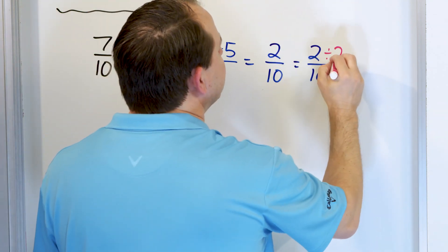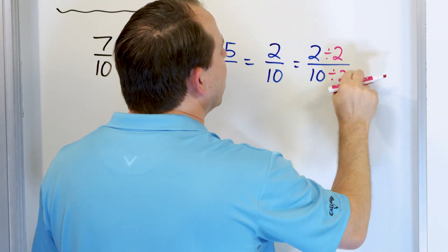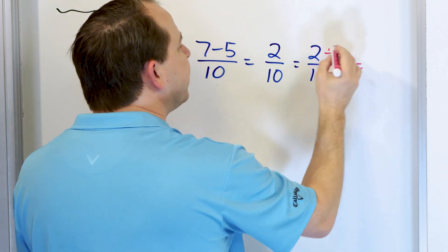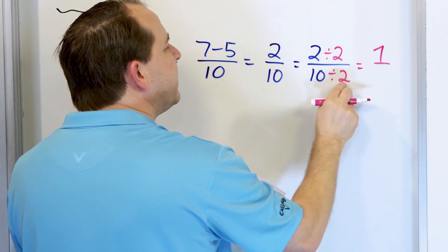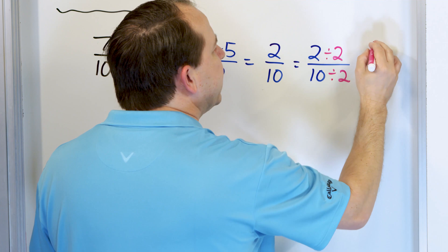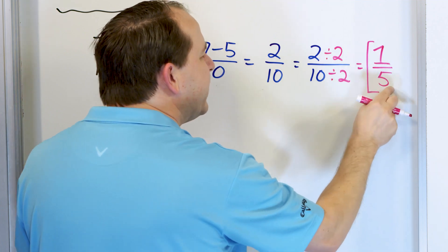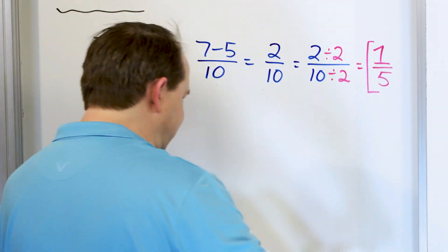We can divide the top by 2 and the bottom by 2. 2 divided by 2 is 1. 10 divided by 2 is 5. So we get 1 fifth, and we cannot simplify that any further.